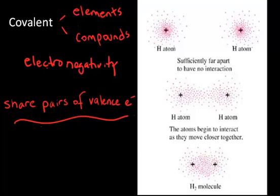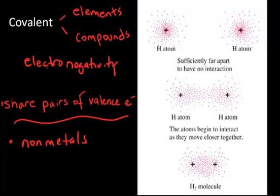We see this largely occurring in the nonmetals. They all have similar electronegativities, so with nonmetal and nonmetal there's not a greater attraction for the electron in one than the other. So rather than the electron completely leaving the valence shell to form a cation and an anion, in the case of the nonmetals we normally see covalent bonding — sharing pairs of electrons.